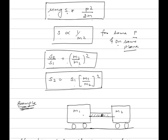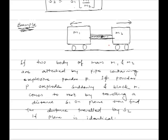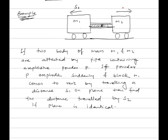Consider this example: two carts are attached through a pipe containing explosive powder. A blast suddenly takes place in the powder and both carts move in opposite directions on an identical plane. If the first cart travels a distance s1, find the distance s2 traveled by the second cart, given masses m1 and m2. The powder explodes and block m1 comes to rest after traveling distance s1 on the plane.